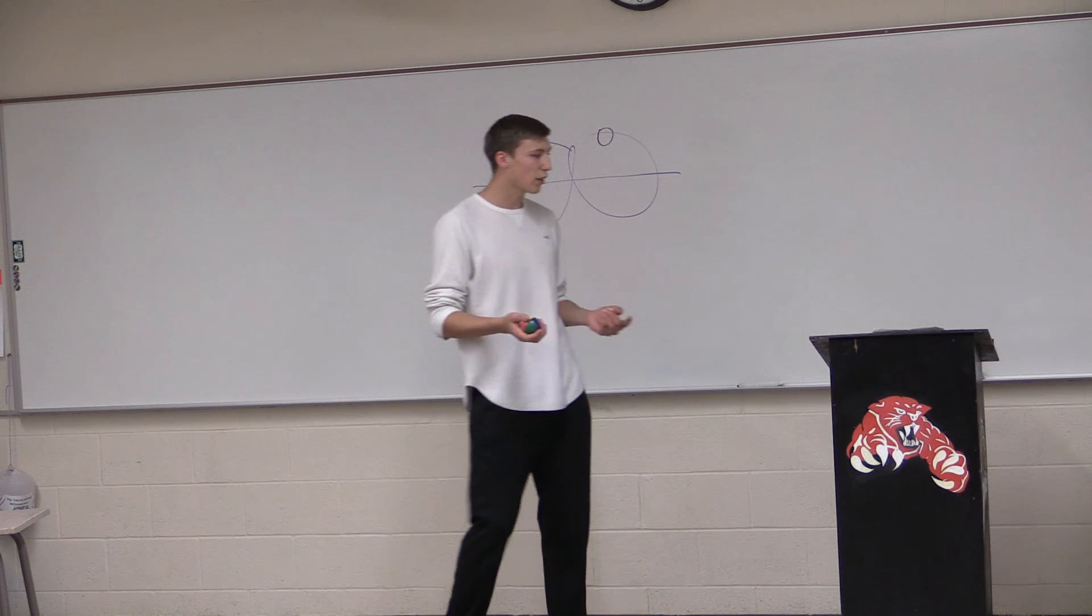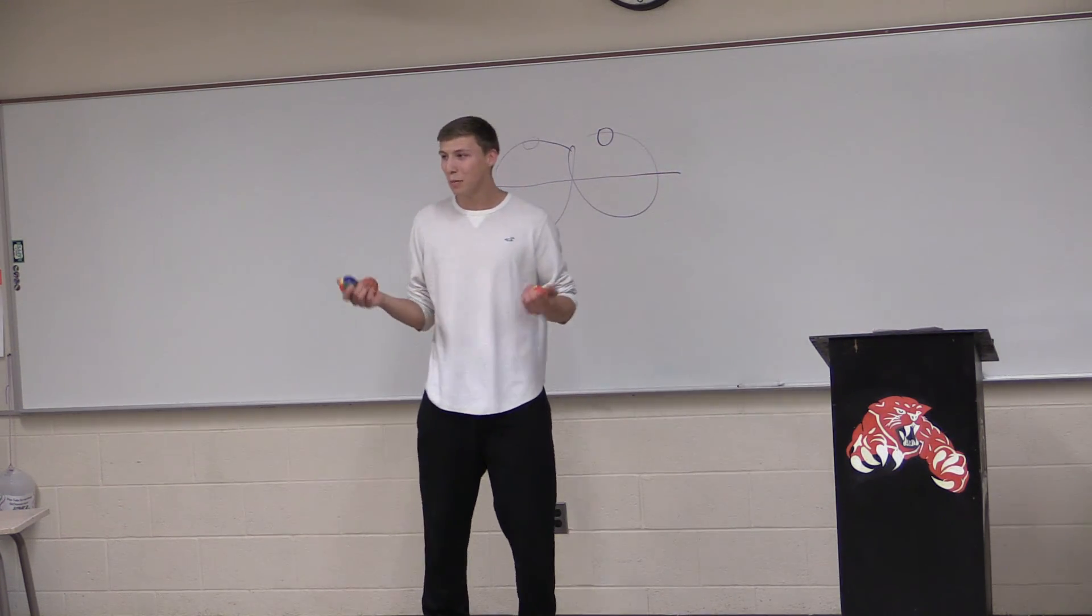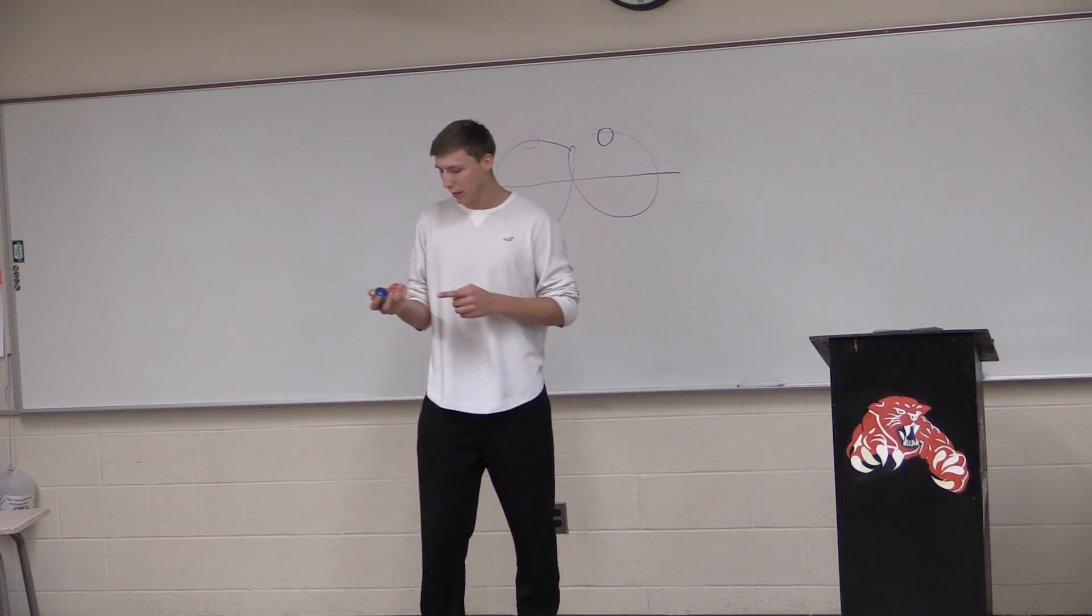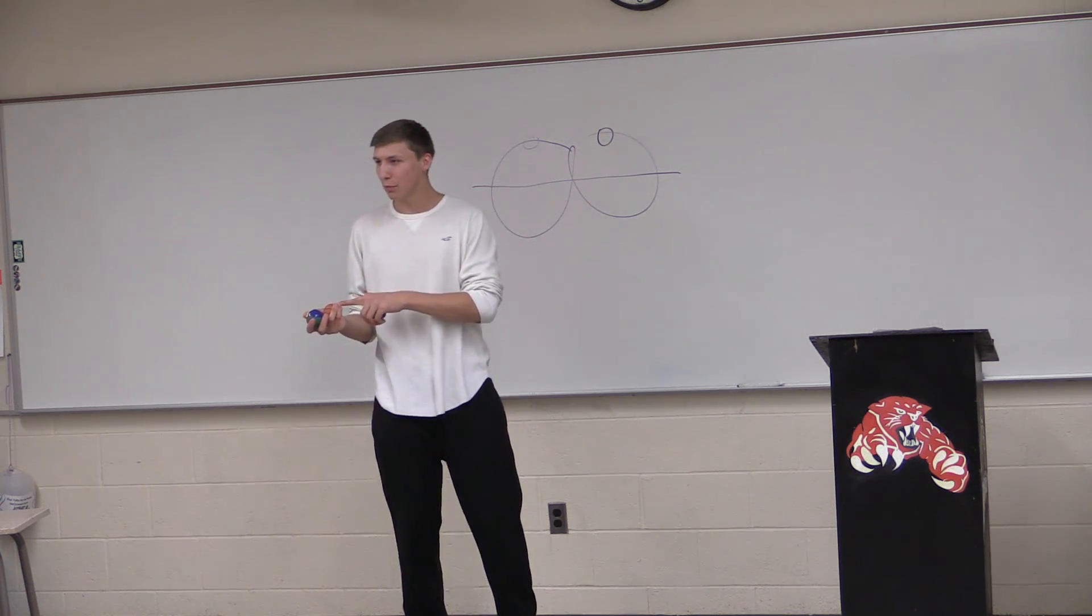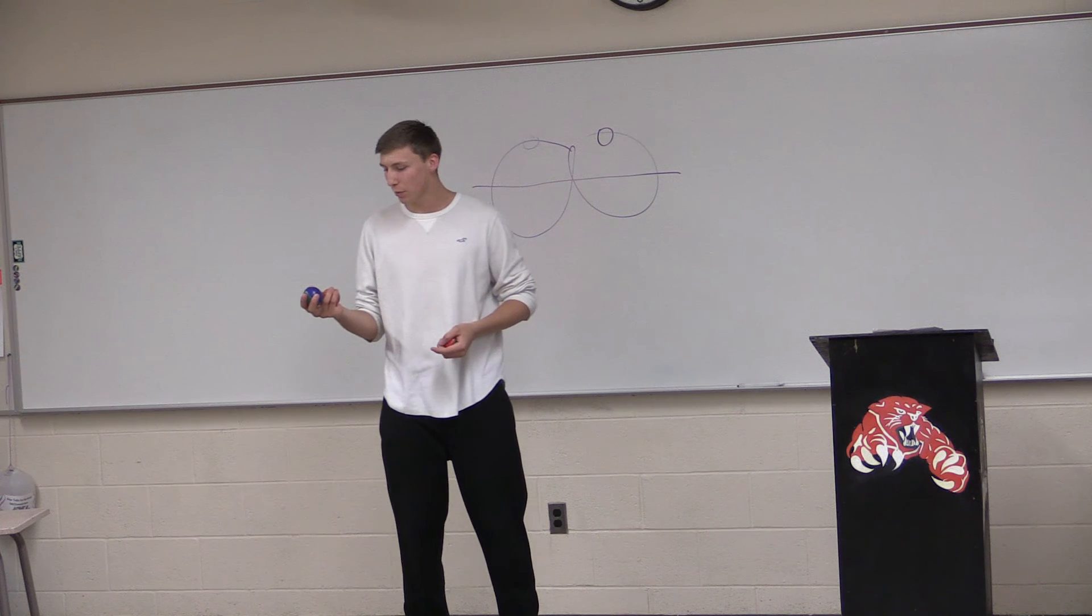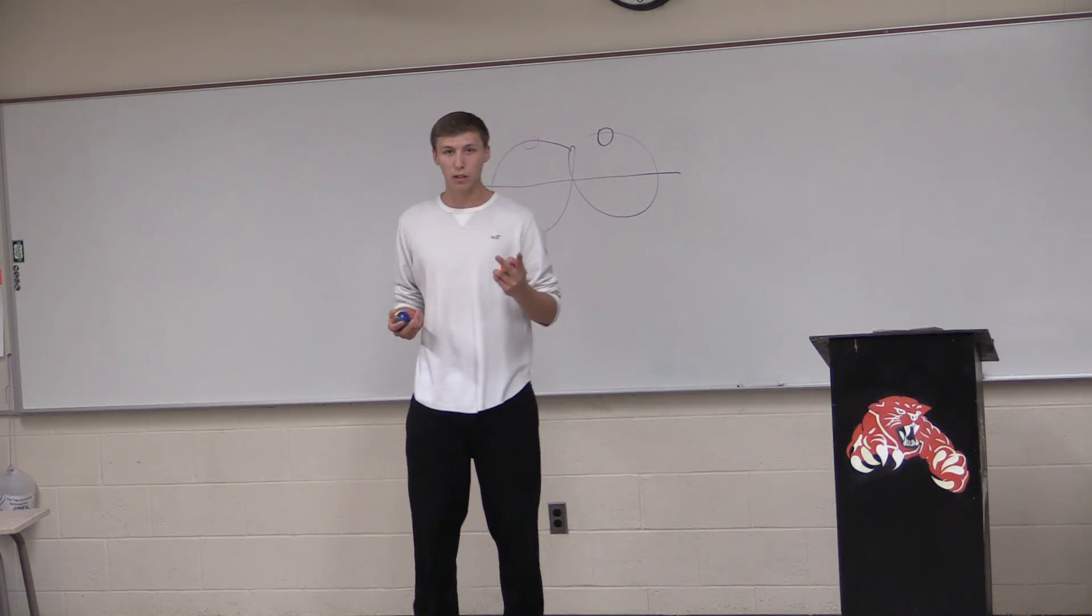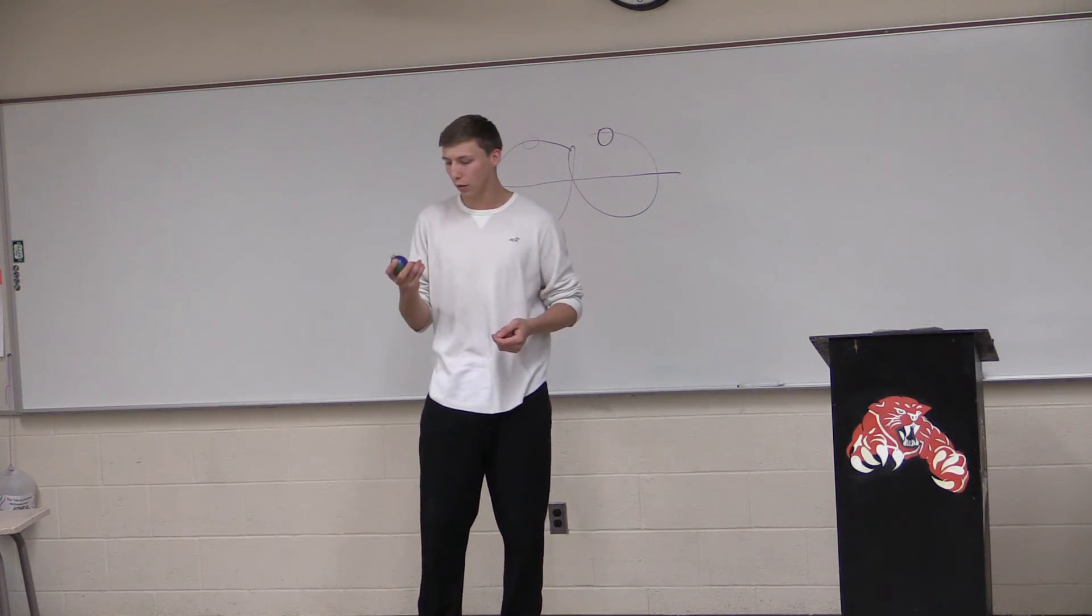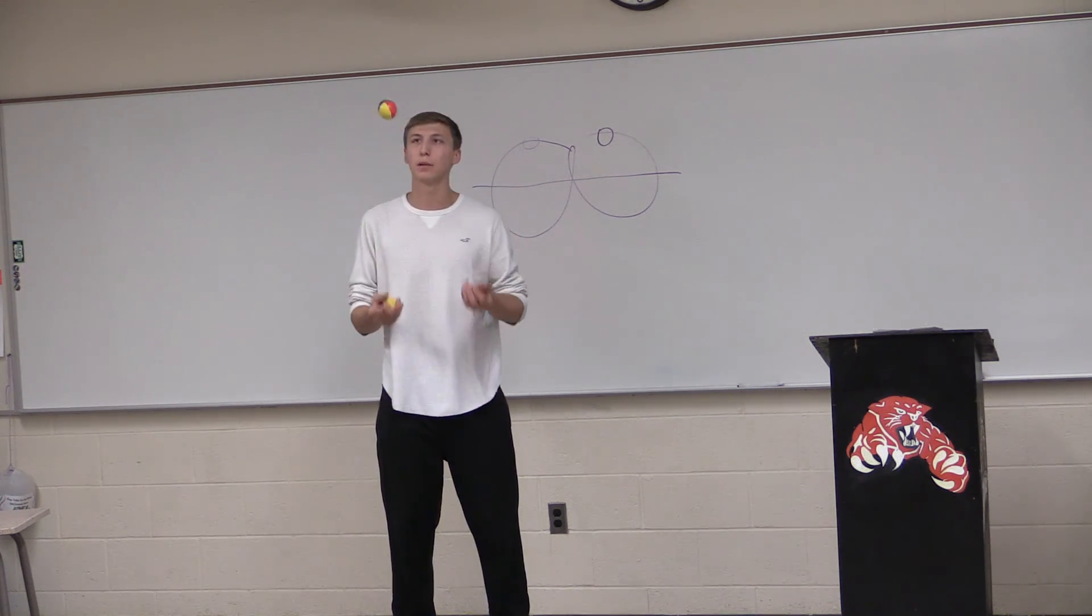And once you get that down, you can start with three balls. Now, I know what you're thinking. I have three balls, but only two hands. So how am I going to hold all three balls? So what you're going to do is hold two balls in one hand. You'll have one ball pressed against your palm with your pinky and ring finger, and the other ball in your fingertips. And you'll start the throw just like the one and two ball throw, except for when the second ball hits its vertex, you'll throw the third ball, like so. And as each ball hits its vertex, you throw the opposite ball.